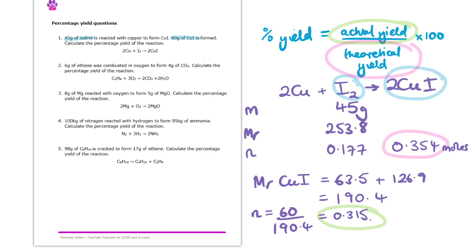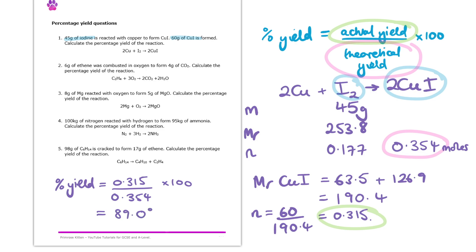So now to get that percentage yield, we take the actual yield of 0.315, divide it by the theoretical yield of 0.354, and times it by 100. If we do that, we get 89.0% to one decimal place.